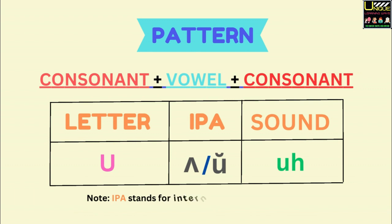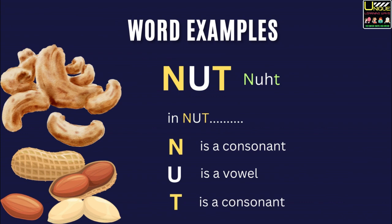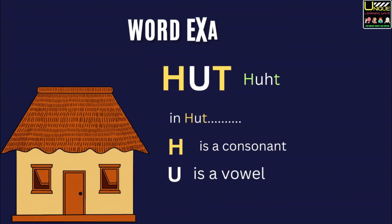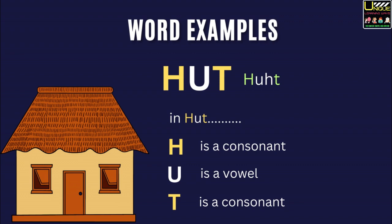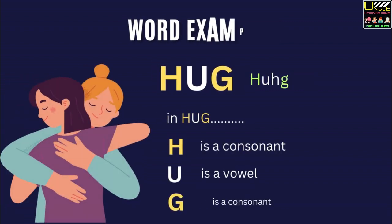Pattern: Consonant, Vowel, Consonant. Letter U, sound /ʌ/. Word examples. Nut. In nut, N is a consonant, U is a vowel, T is also a consonant. Hurt. In hurt, H is a consonant, U is a vowel, T is also a consonant. Front. In front, F is a consonant, U is a vowel, N is a consonant, and D is also a consonant. Hug. In hug, H is a consonant, U is a vowel, G is also a consonant.